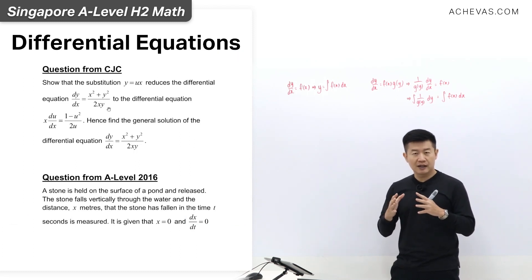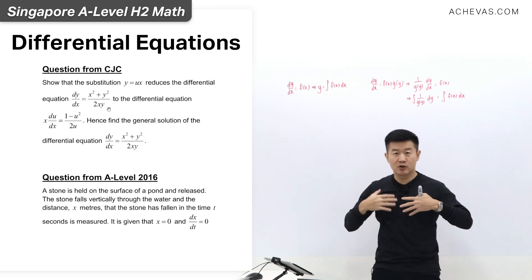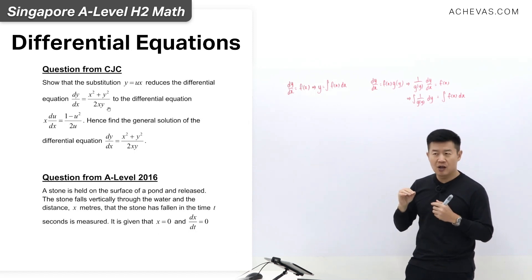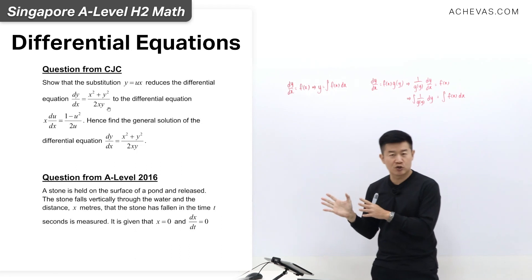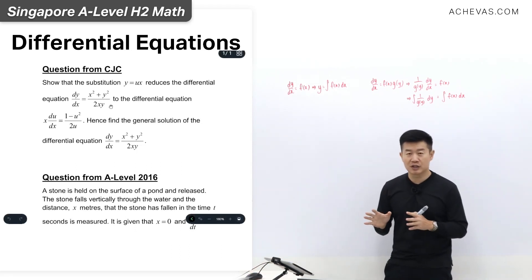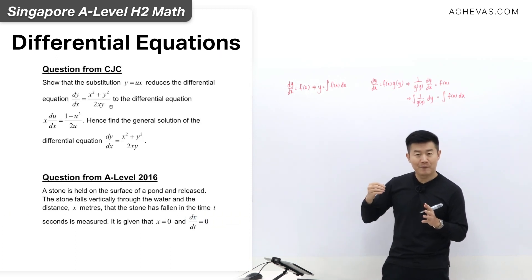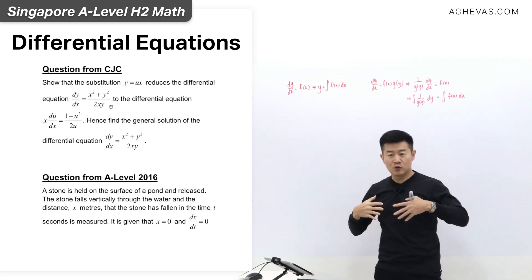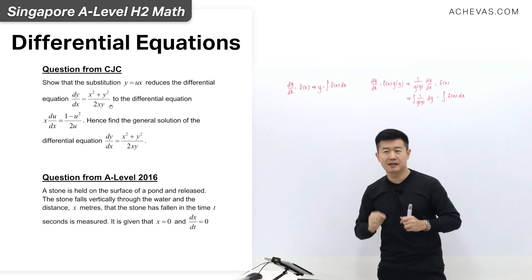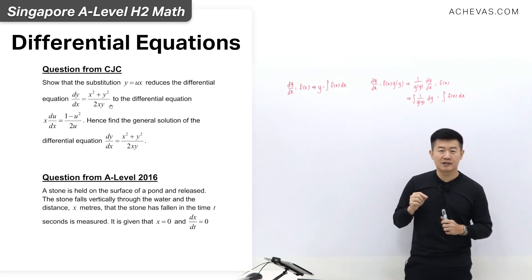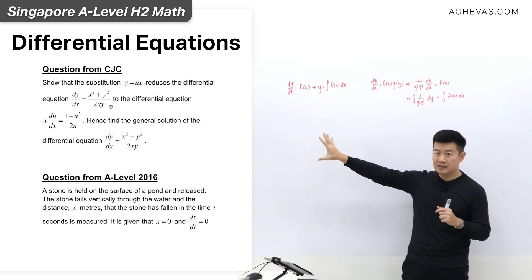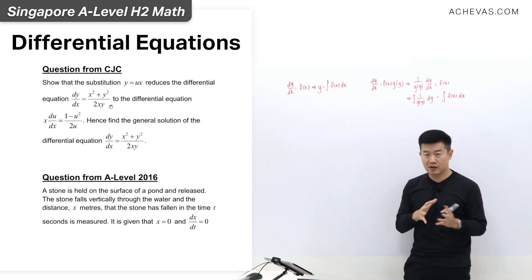The question doesn't fall into the category of differential equations we can solve independently. So what the question attempts to do is give us a help — a set of instructions we are simply supposed to follow, to manipulate and change this differential equation into a format that, once done properly and correctly, will become either the first or second kind which we can then solve using what we are taught in our syllabus. Just in case the question gives us a set of instructions that is a little different from the usual ones we have practiced — this CJC one is the more typical kind.